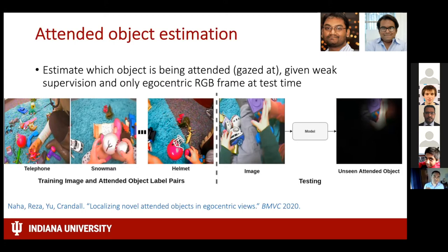What I've talked about so far is a shallow or superficial collaboration — the developmental psychologists collected data, needed help analyzing it, and we developed computer vision solutions and published in CV conferences. But what I want to talk about more now is a really interesting feedback loop: we can use egocentric vision to study child development, but maybe that can also improve computer vision.